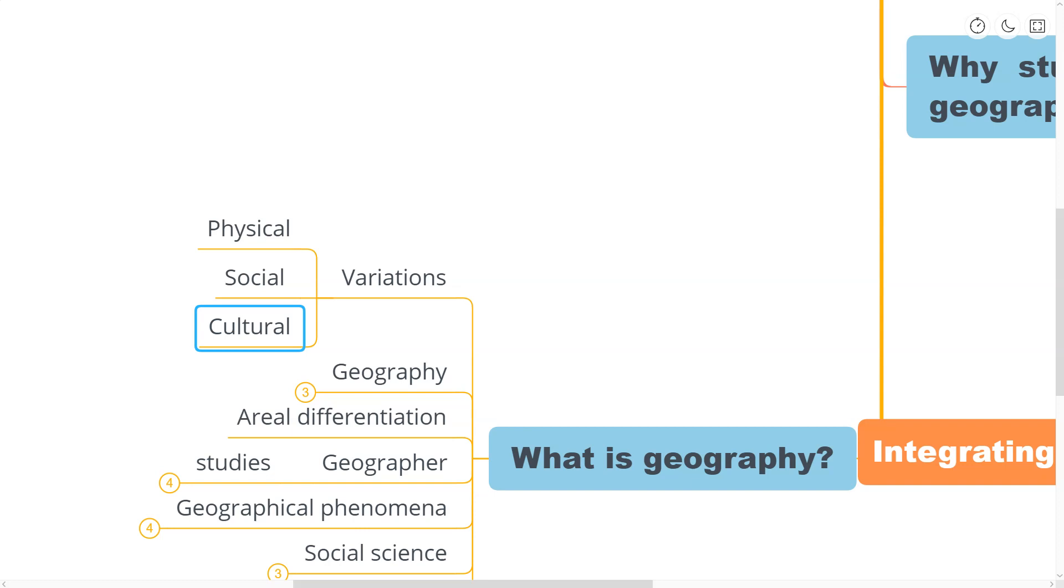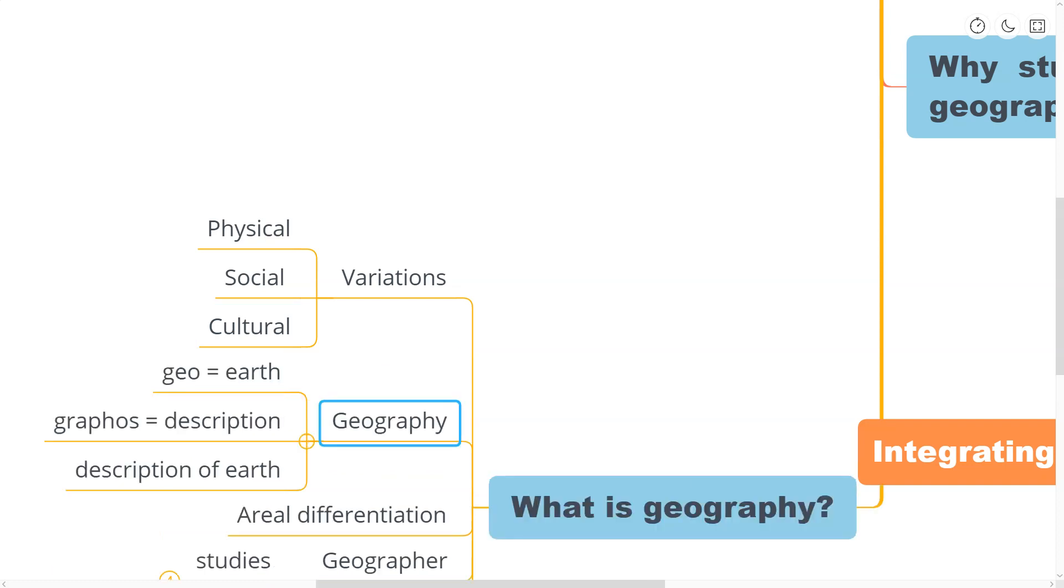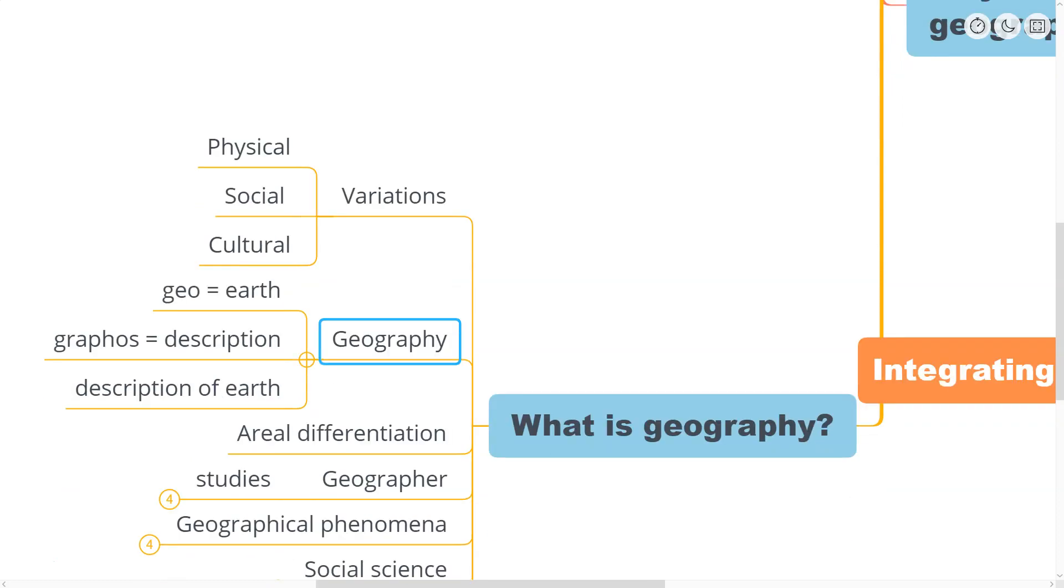Now, we can try to attempt to answer the question: what is geography? In very simple words, geography can be said that it is simply the description of the earth. This term geography was coined by Eratosthenes, who was a Greek scholar. The word has been derived from two roots from the Greek language, where geo means earth and graphos meaning description. It basically means the description of the earth when these two words are put together. The earth has always been seen as the abode of human beings, and thus scholars define geography as the description of the earth as the abode of human beings.